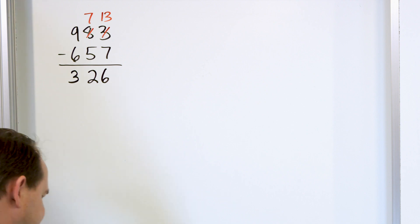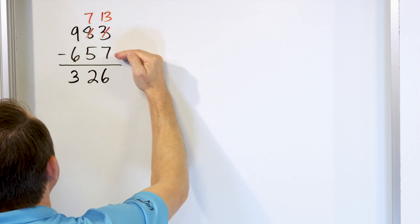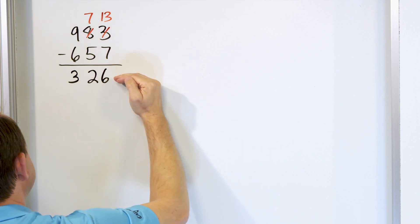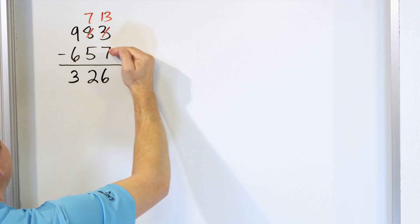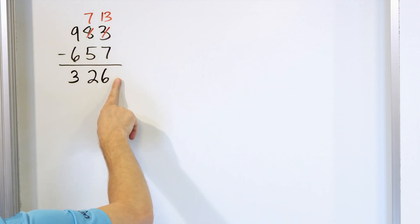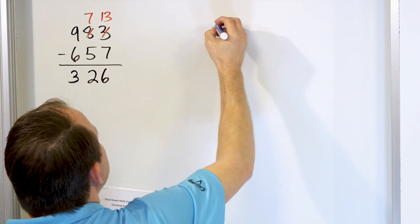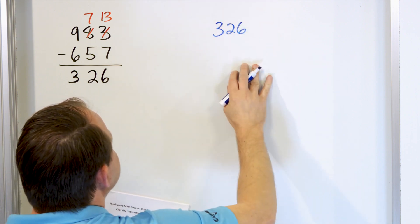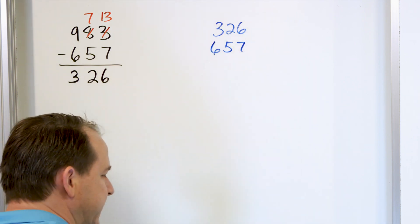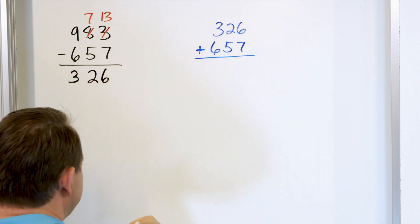So we think this is the correct answer, but let's check it by subtraction. If we say that 983 minus 657 is 326, that's how much we took away to get 326. If we start with 326 and add back in the 657, then we should get back what we started with. The opposite of subtraction is addition — we're checking our subtraction problem by adding.